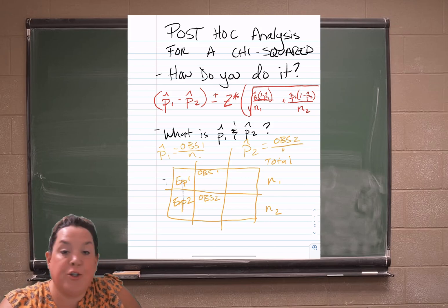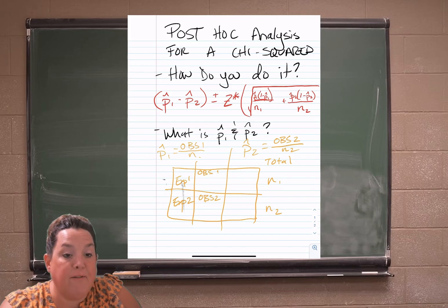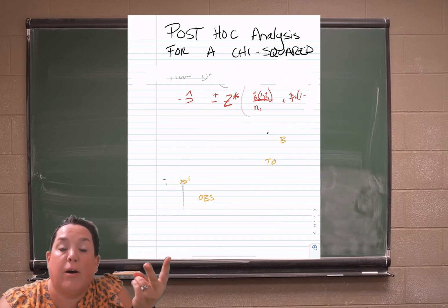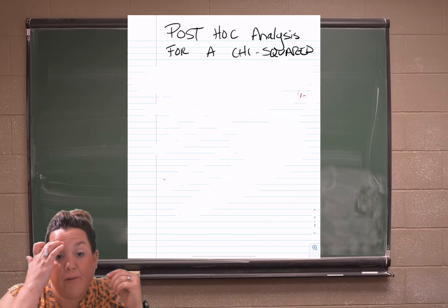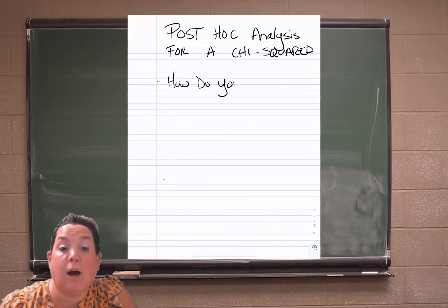So how do you interpret the interval once you've done it? Now we've interpreted confidence intervals before. So you know that you have to say how confident you are, your parameter, and then the interval itself. Usually these are 95% confidence intervals.